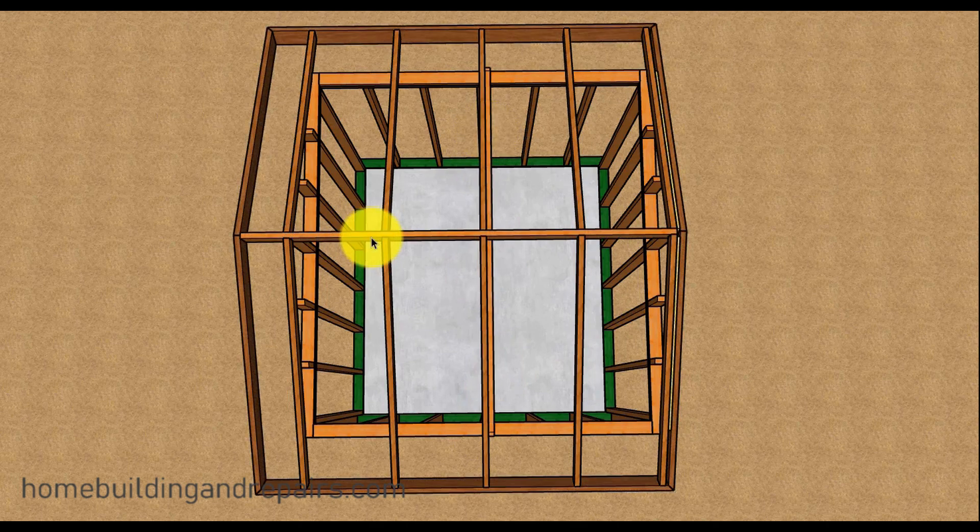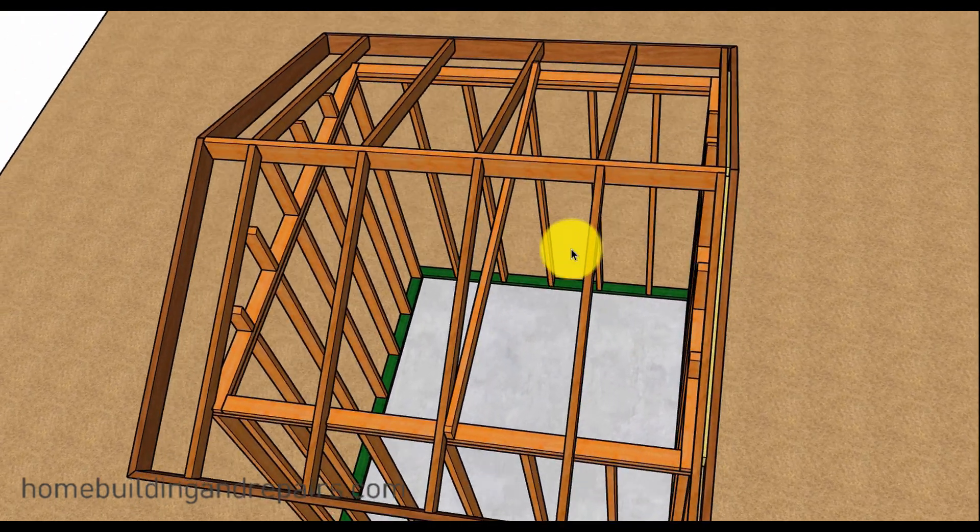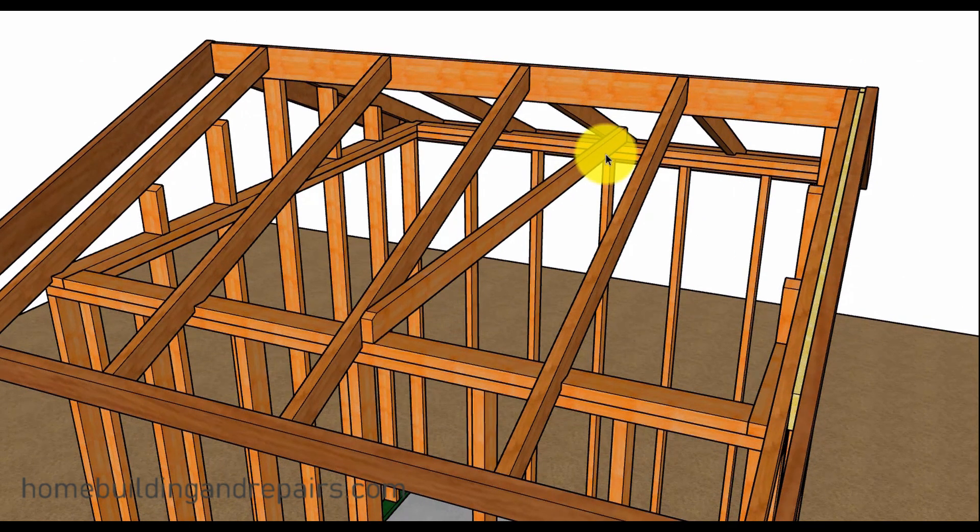But something like this is going to be a little stronger. All we're going to be doing is adding one collar tie and a ridge. So why not go back to the tried and true stuff that works? Remember, collar ties are usually spaced 4 foot on center.